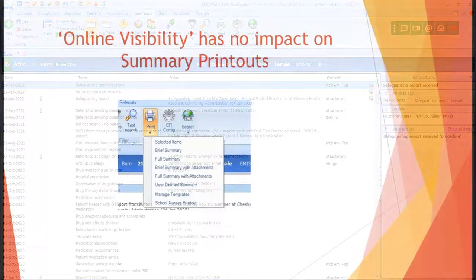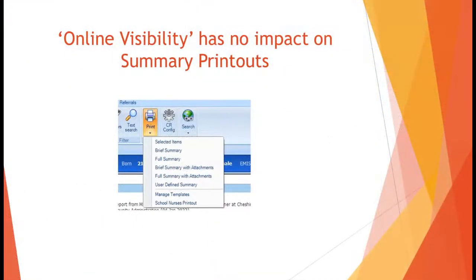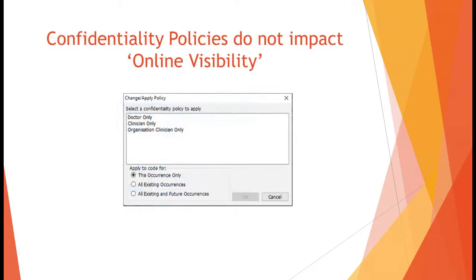A few things worth remembering. Firstly, online visibility has no impact on the content of your summary printouts — if something's not visible online, it will still be included in a summary printout. Confidentiality policies will not impact online visibility. Confidentiality policies will restrict access to data by users of the system, but data protected by confidentiality policies will still be visible online.